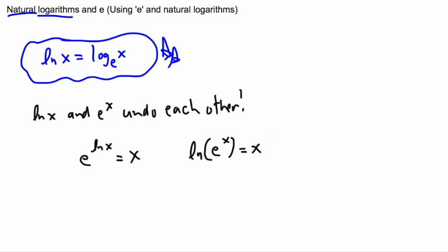Because natural log of E to the X - well, natural log and E undo each other, so you just have X. So I'm showing you how these things can cancel each other out. It's like this cancels out that, this cancels out that. So you're just left with X. It's like the X just drops down to the floor. Same thing here, just sort of goes boink, drops down.